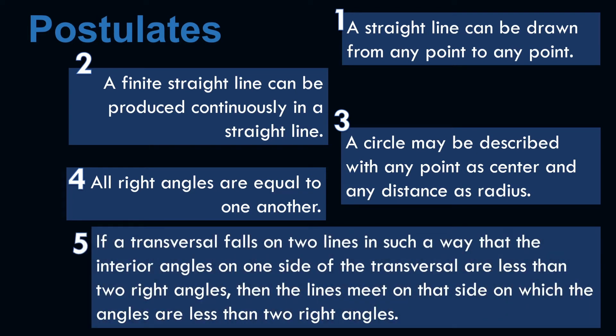The fifth one is a long statement. It states if a transversal falls on two lines in such a way that the interior angles on one side of the transversal are less than two right angles, then the lines meet on that side on which the angles are less than two right angles.